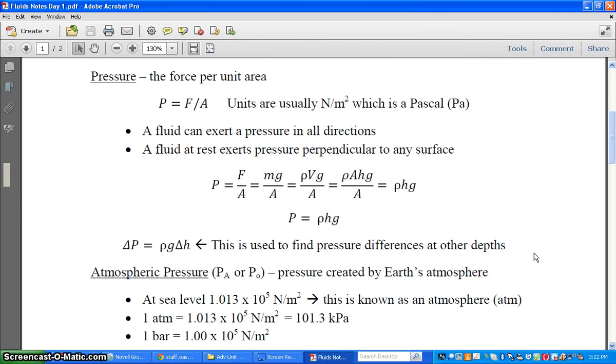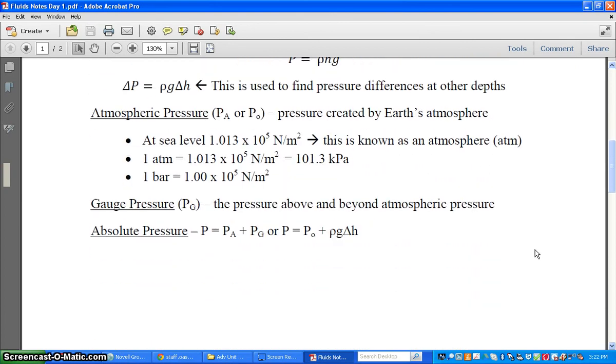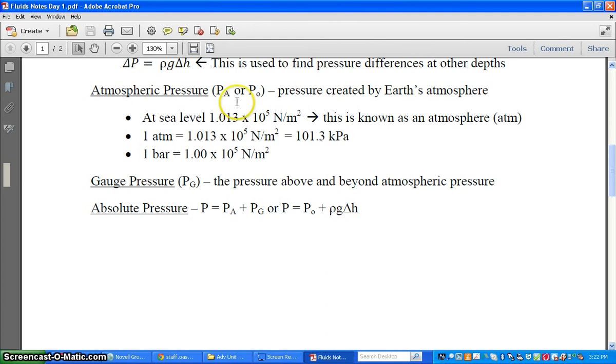So now some other basic terms that we need to know. Something called atmospheric pressure, which oftentimes gets the symbol PA or sometimes P0. This is the pressure created simply by the Earth's atmosphere and all the air that's above us. Okay? Just so you know, at sea level, 1.013 times 10 to the 5th newtons per meter squared, that is also known as one atmosphere. Okay? And then I've given you a couple conversions here, which maybe you remember from chemistry, maybe you don't.